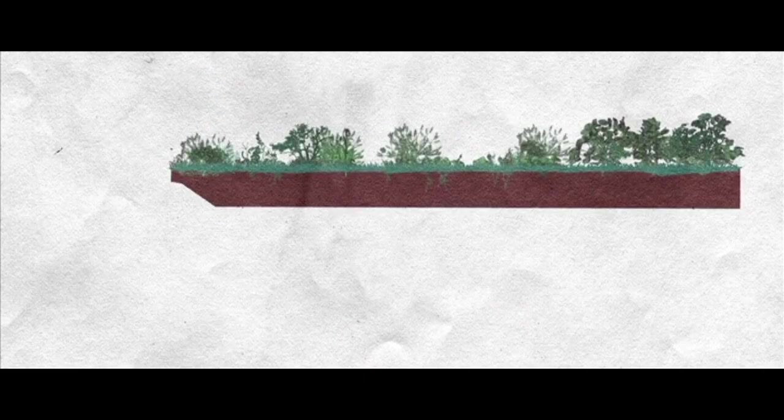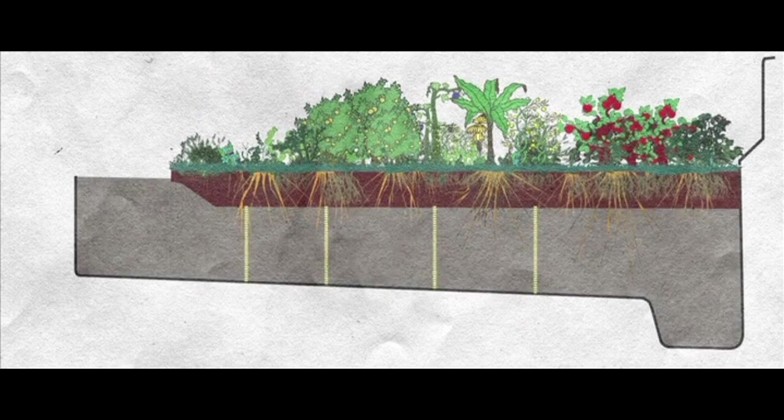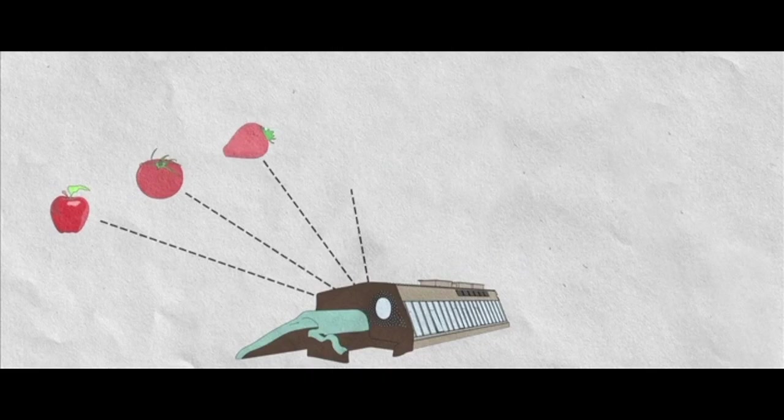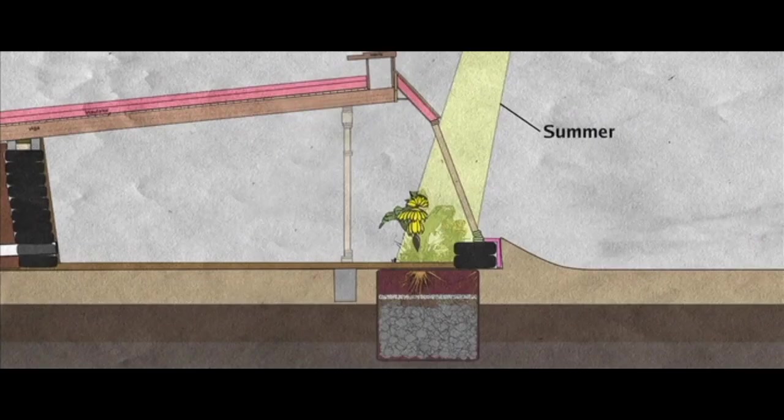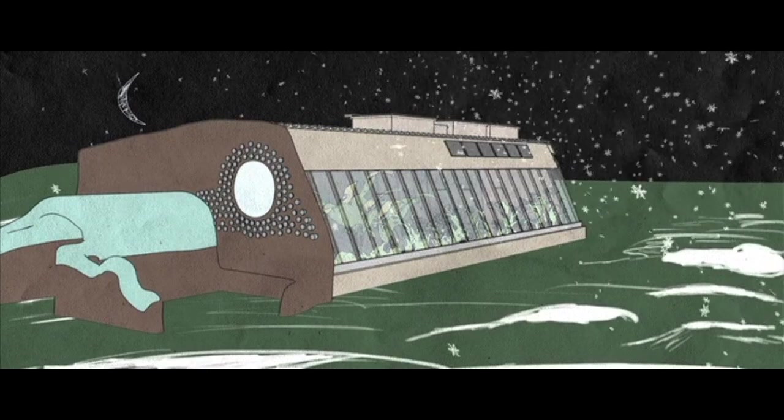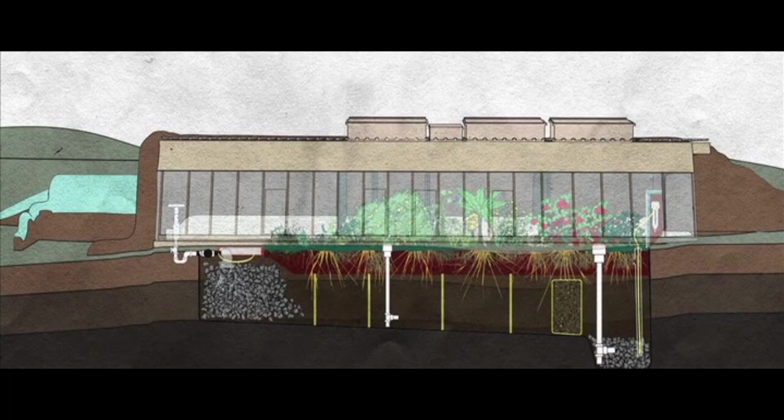In short, earthships can grow food year round by providing sunlight all year, protection for the plants from extreme conditions like frost, an automatic watering system, a good soil composition and nutrients from grey water like nitrogen and phosphorus.